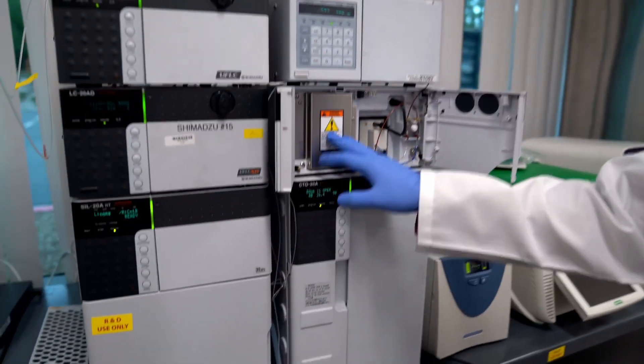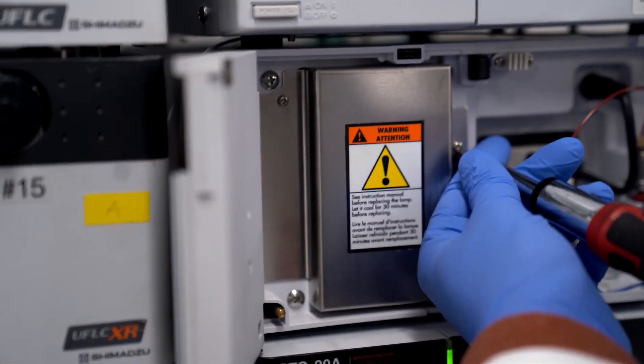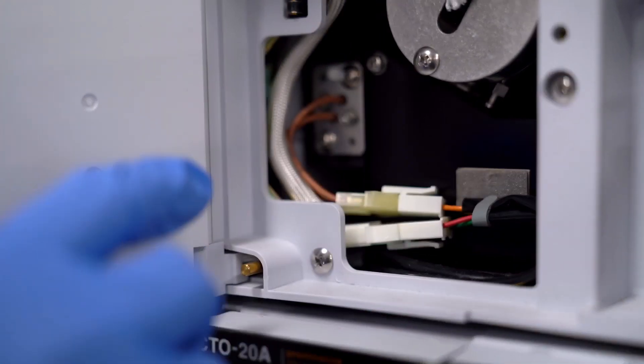The lamps are located behind this, so we want to take off these two little screws here. Let's do that. Okay, all right, so now that this metal box is off, what you'll see is...